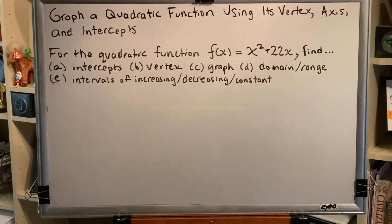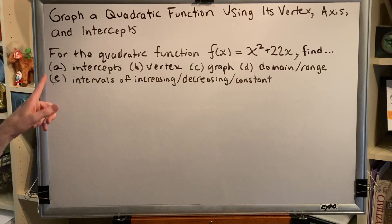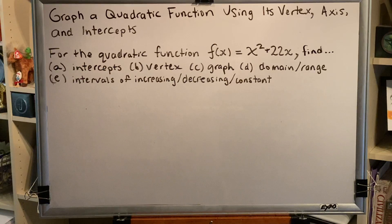Let's look at a problem. For the quadratic function f(x) = x² + 22x, find the intercepts, vertex, create the graph, the domain and range, and the intervals of increasing, decreasing, and constant.